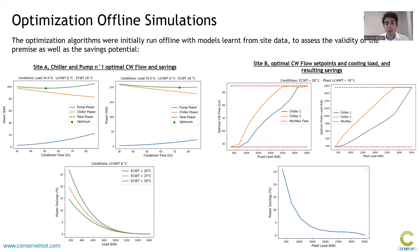These models were then used to run the optimization described earlier. Initially, offline simulations were run to assess the validity of the premise as well as the savings potential of the approach. For site A on the left, we have a case where condenser flow optimization only is examined. The two top graphs show the optimum condenser water flow that minimizes both chiller and pump power — for a load of 30 percent and a load of 70 percent — and in each case the optimum condenser water flow is found to be different. This highlights that a typical strategy keeping condenser flow constant may not be optimal at all times. Below, the calculated savings compared to keeping condenser flow at design value show good savings up to 25 percent depending on the entering condenser water temperature and load conditions.